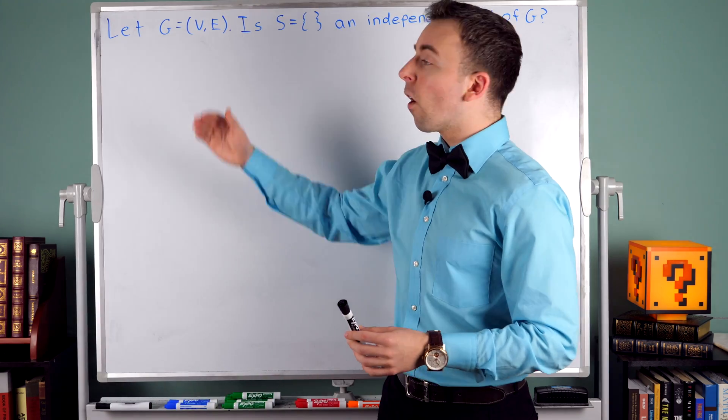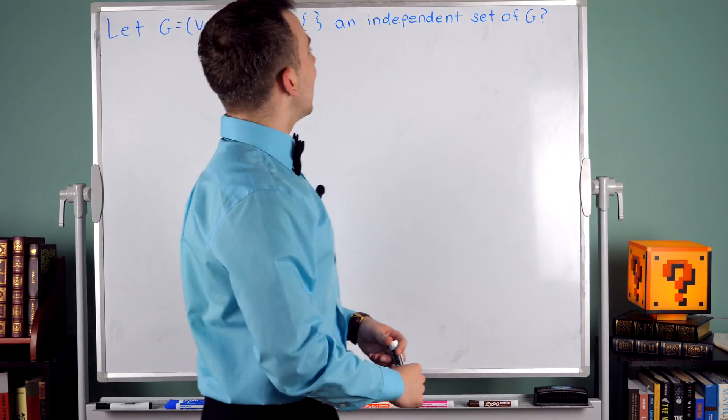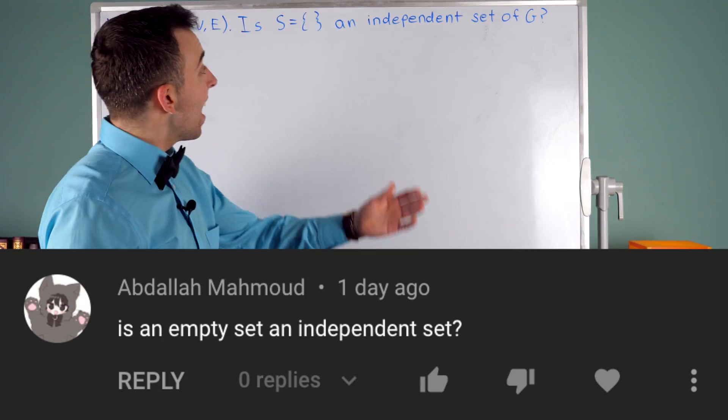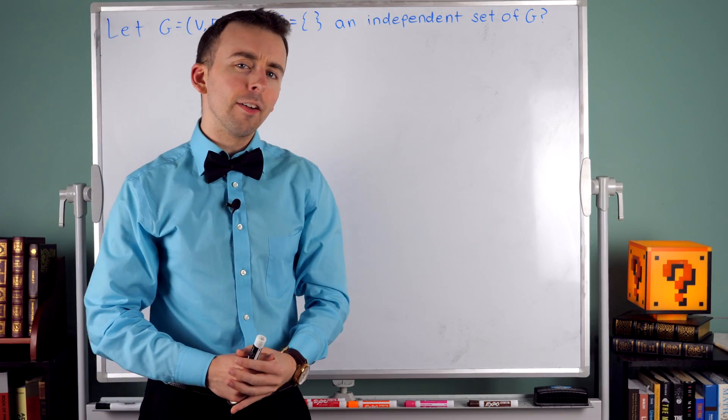Suppose we have an arbitrary graph. Is the empty set, the set with nothing in it, an independent set of the graph?